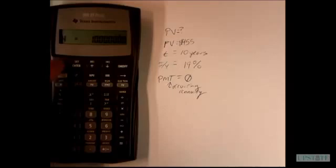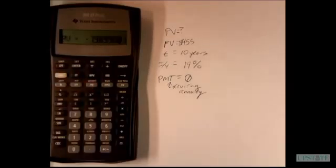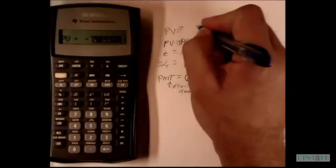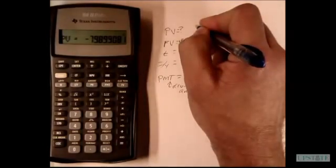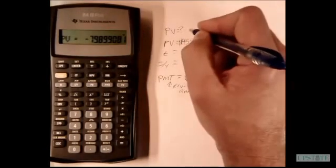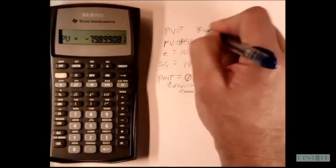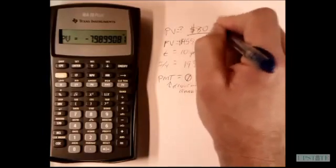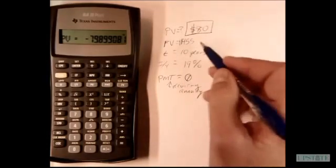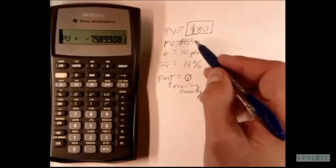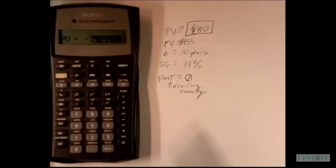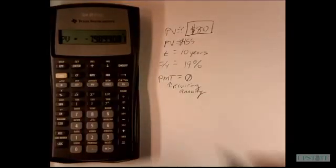And then we solve this by hitting compute present value. And you'll notice here that it comes up with a negative 79.89, so basically this rounds to $80. And so the actual value of this payment of 455 today is $80. So that's the basic way that we compute present value.